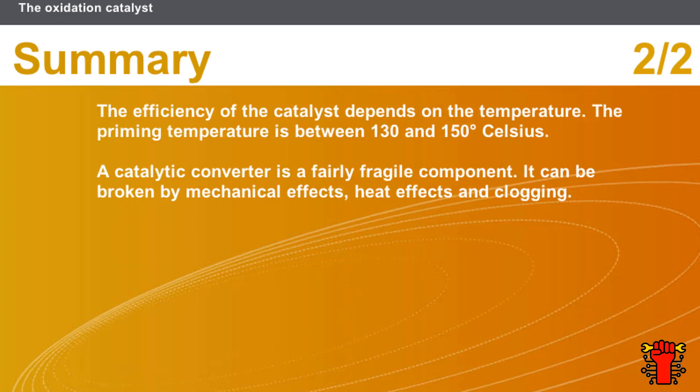The efficiency of the catalyst depends on the temperature. The priming temperature is between 130 and 150 degrees Celsius. A catalytic converter is a fairly fragile component. It can be broken by mechanical effects, heat effects, and clogging.